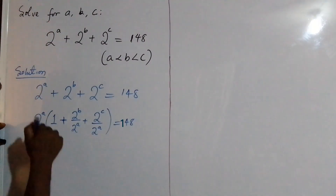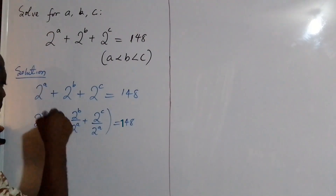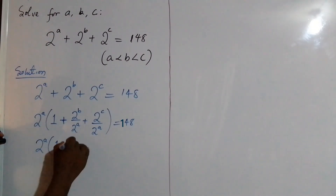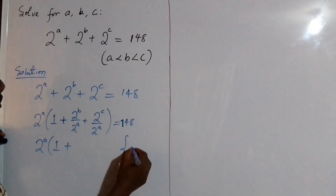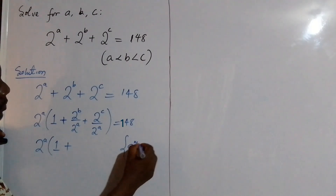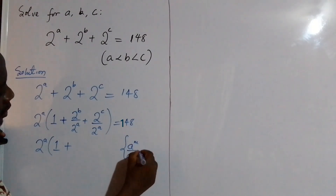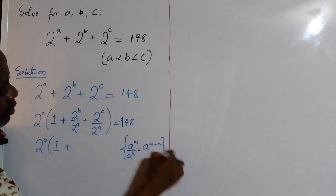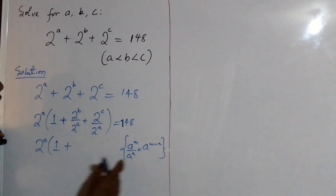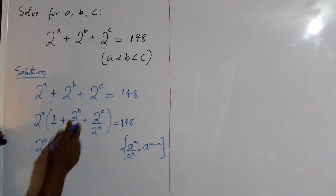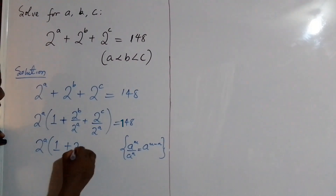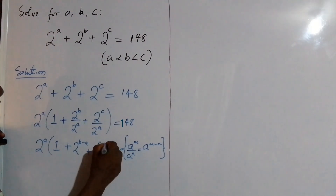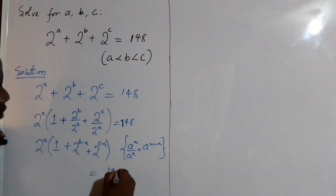We are going to further simplify what we have within the parenthesis. Remember we have the rule: a to the power of m over a to the power of n equals a to the power of m minus n. Using this rule, we simplify to get 2^A times (1 plus 2^(B−A) plus 2^(C−A)) equals 148.